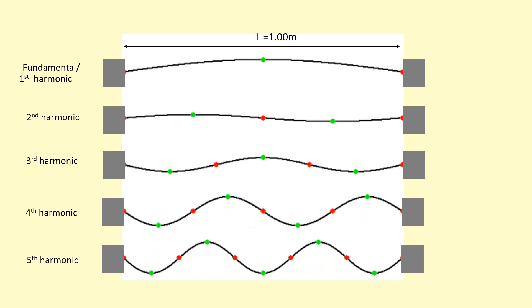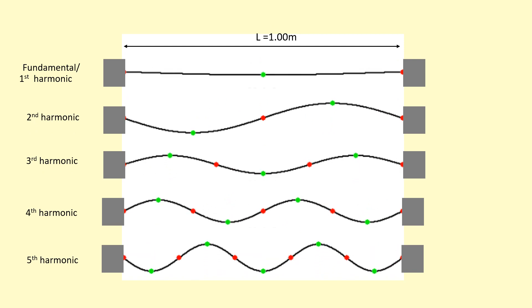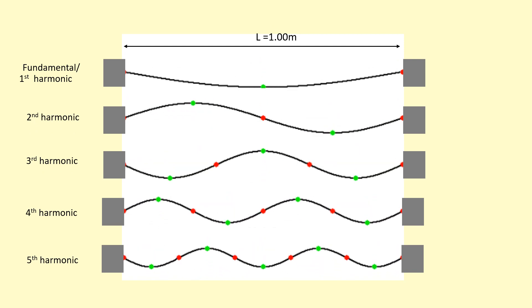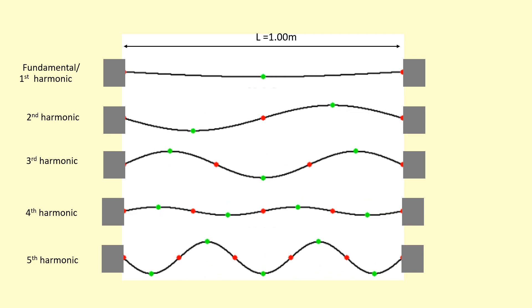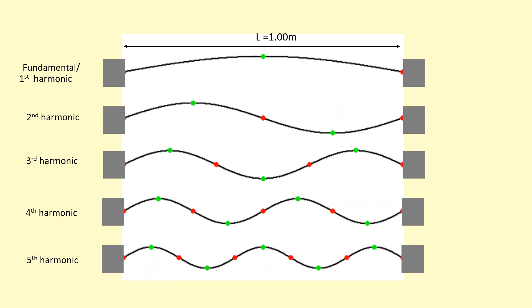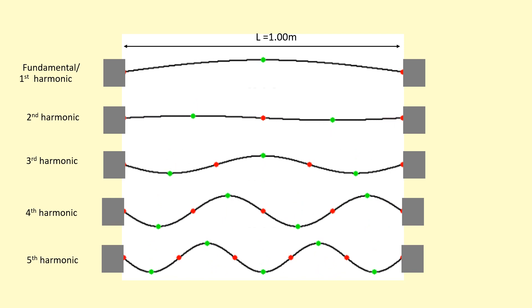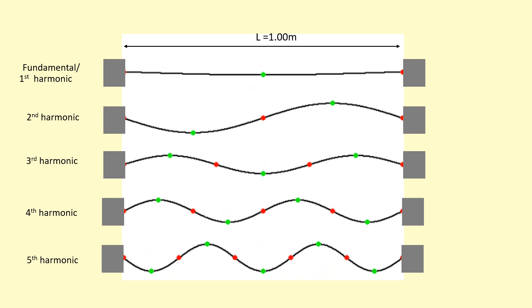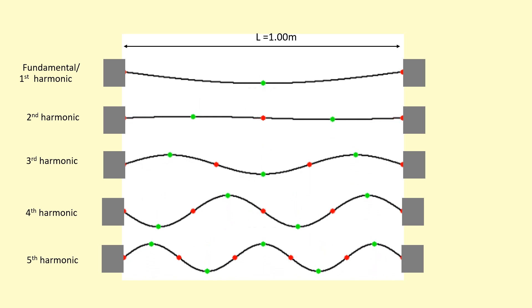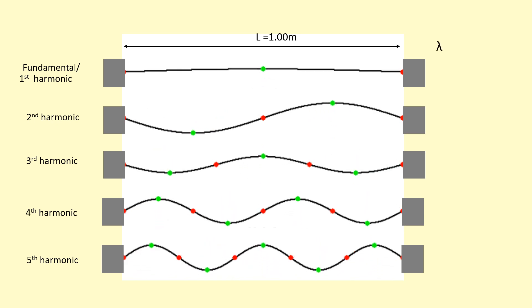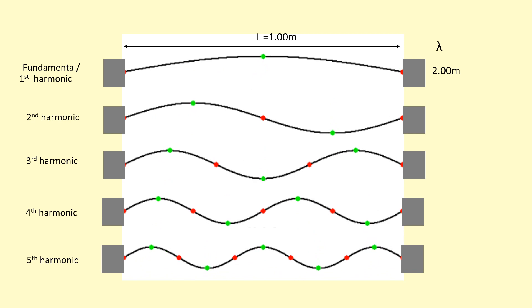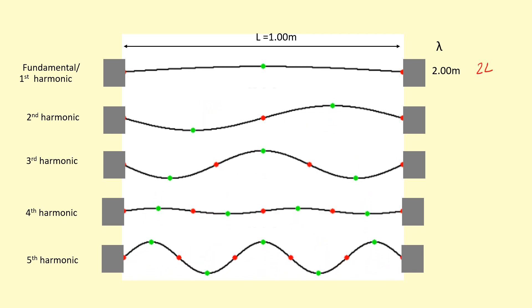The two fixed points at the ends are one meter apart, or length L. What is the wavelength of the fundamental, the first harmonic? As you can see, there's only one loop in the first harmonic, but you need two loops to make a whole wave. So we say that this has a wavelength of 2L — in other words, two meters in this case.